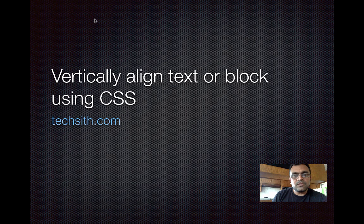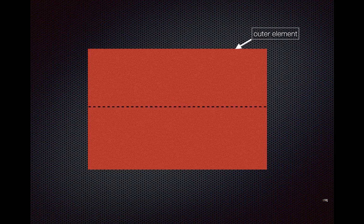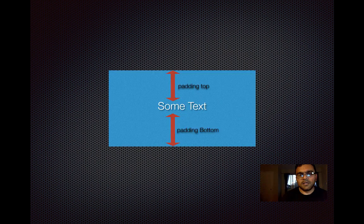Hi and welcome to this CSS tutorial. In this tutorial we are going to learn how to vertically align text or a block using CSS. Apparently there is not a single solution to this problem — it very much depends on what you are trying to align. If you have an outer element and you draw a line right in the middle, we want to align another element vertically centered.